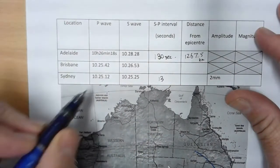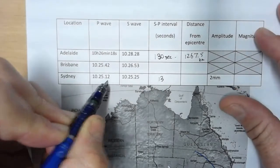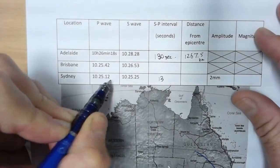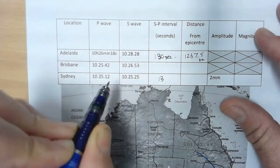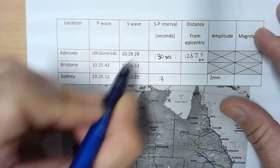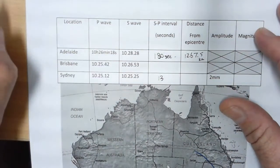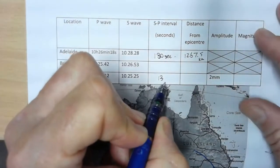So what have we got? We know the arrival of the P wave: 10:25 and 12 seconds. The arrival of the S wave was 10:25 and 25 seconds. The difference between the P and the S, the S-P interval, is only 13 seconds, but that's important information for us to have.